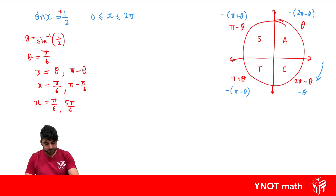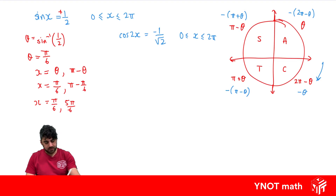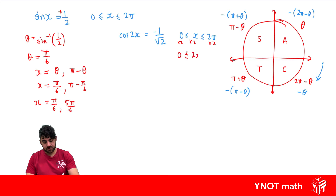Let's look at another question: cos 2x equals minus 1 on root 2, with the same domain where x is between 0 and 2 pi. In this case, the domain needs to be changed because inside our trig function we're multiplying by a constant — 2. We manipulate the domain to match what's inside, so since it's 2x we multiply everything by 2, giving us 0 ≤ 2x ≤ 4 pi.